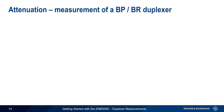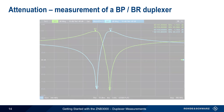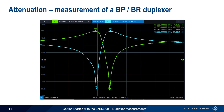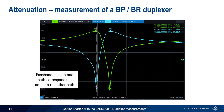Let's compare our band reject only duplexer to a combination band pass / band reject duplexer. Here both traces have clear positive peaks, showing the presence of one or more band pass filters. The center frequency of each passband corresponds to the notch frequency of the opposite port. As before, markers can be placed to provide more precise numerical information, displayed directly on screen.